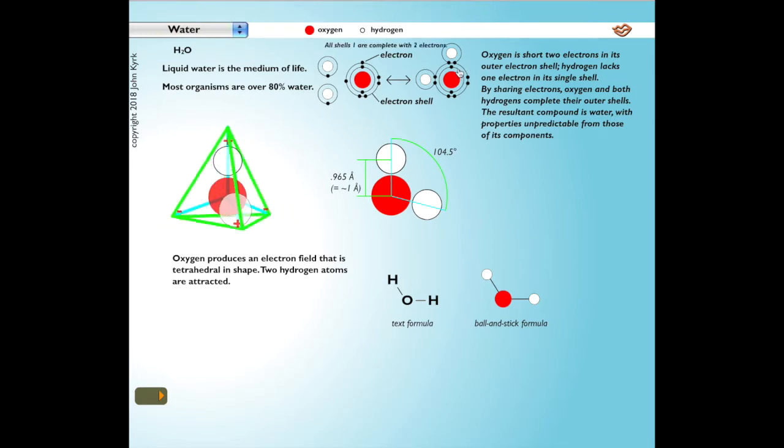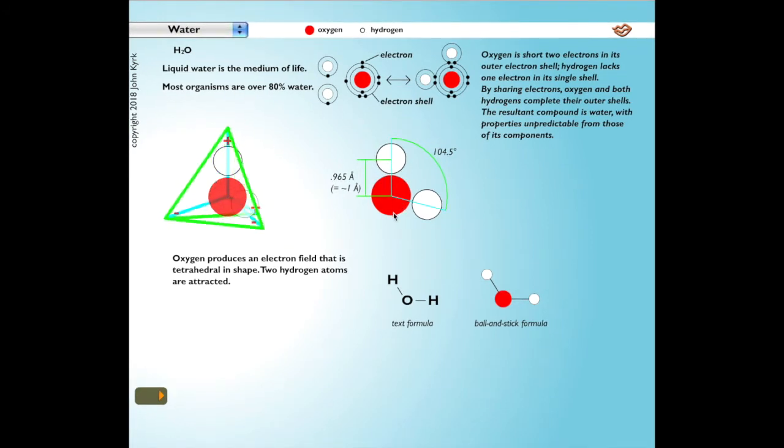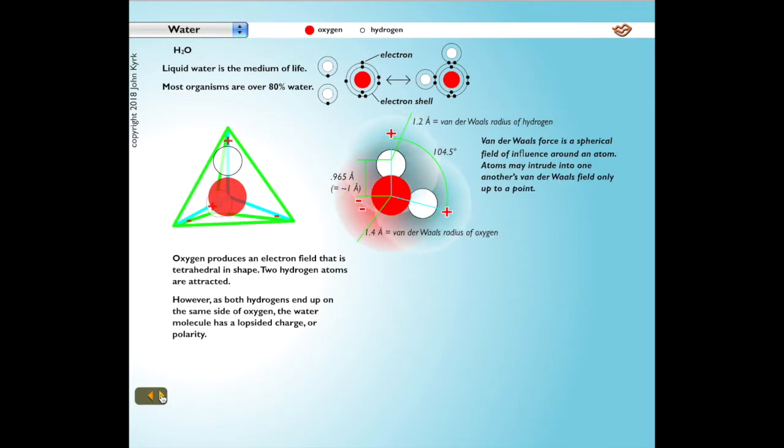Analysis shows the hydrogen atoms sit balanced against the oxygen's free electrons, rather than lying on opposite sides of the oxygen nucleus. Instead, they make a 104.5 degree angle centered on that nucleus. Each hydrogen's nucleus is 0.94 angstroms from the center of the oxygen atom. The van der Waals force is a spherical field of influence around an atom. Atoms may intrude into one another's van der Waals fields only up to a point.